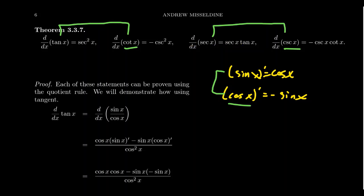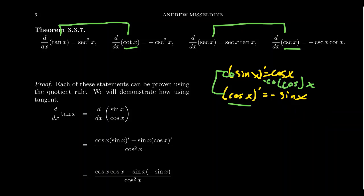The same is also true for sine and cosine. If you take the derivative of sine you get cosine. If you take the derivative of cosine you get negative sine. That is, the derivative of sine — if you slap a 'co' in front of it — you're going to get a negative cosine. If you take the complement of the complement you get the original function. The derivative of a trigonometric function — if you know it, you can find the derivative of its complement by adding a negative sign and switching to the co functions.